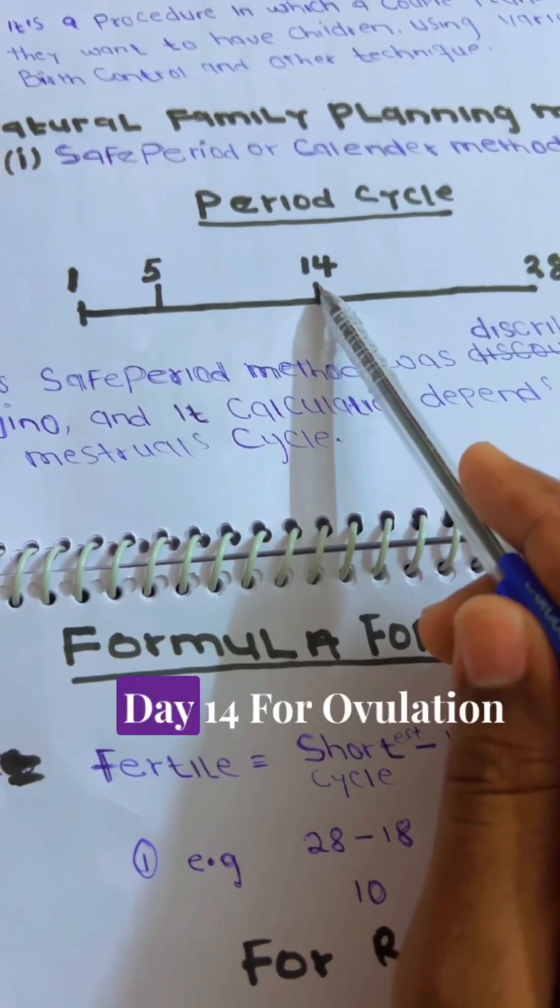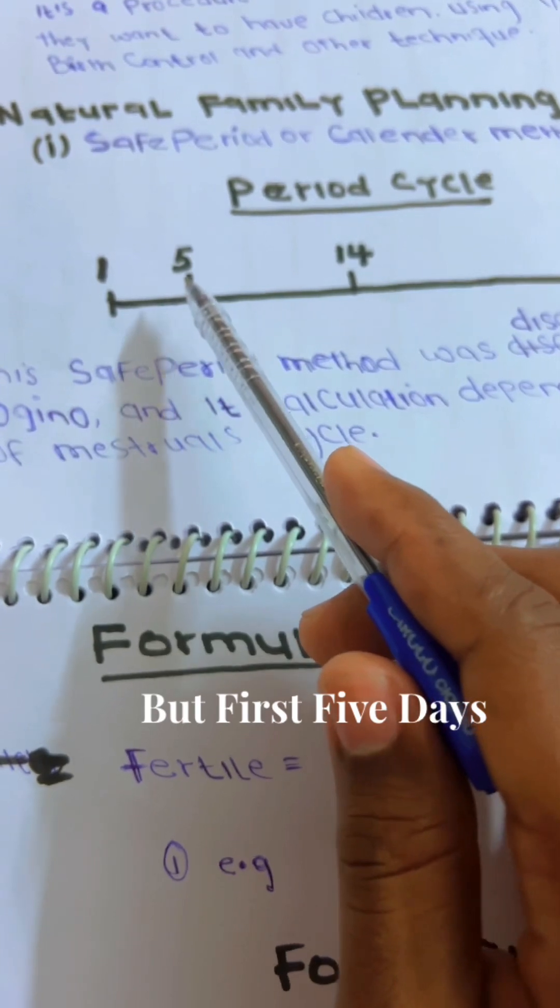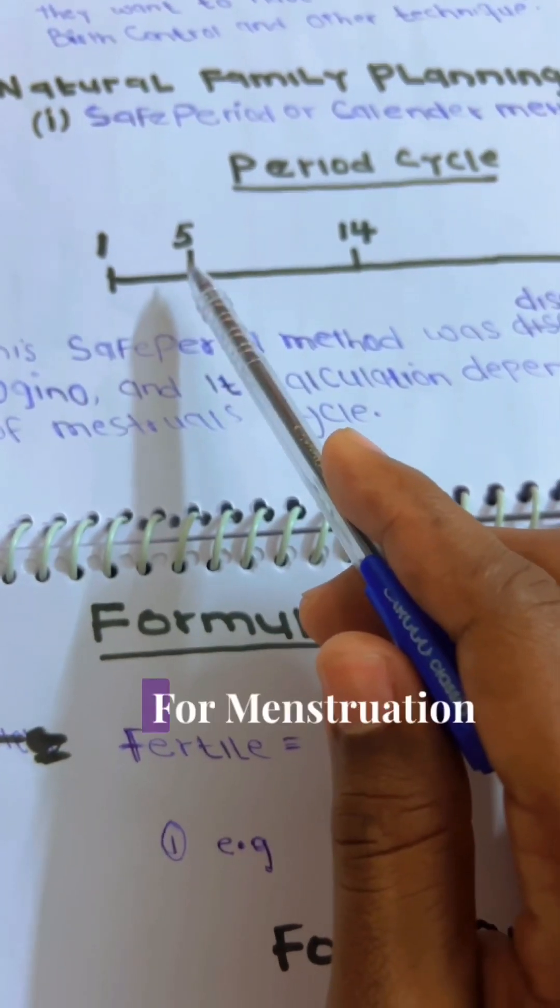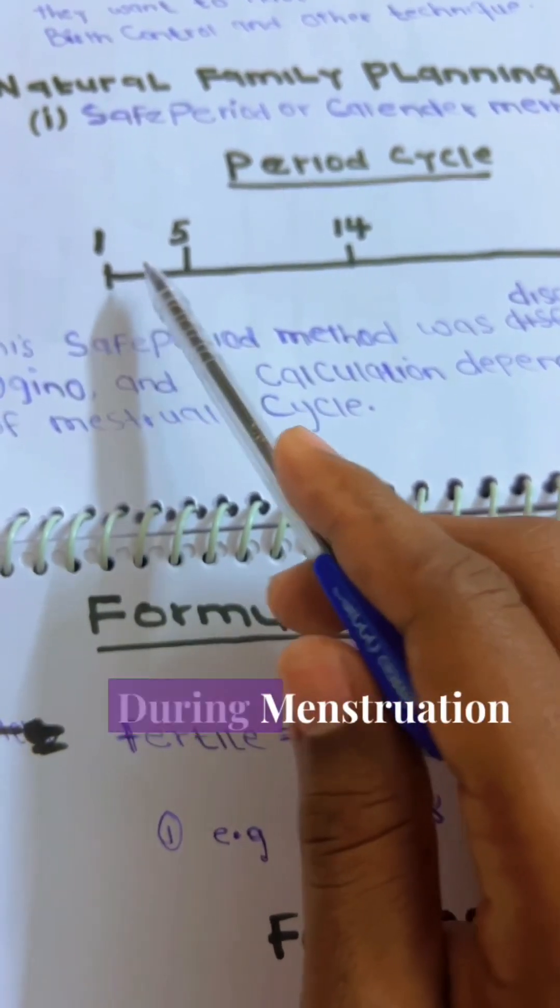This is the period for ovulation. But the first 5 days, it is for menstruation. Then, you cannot have intercourse during menstruation.